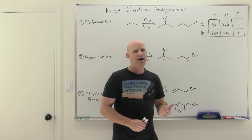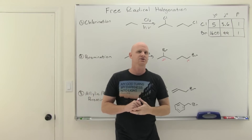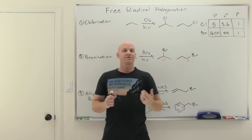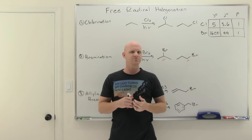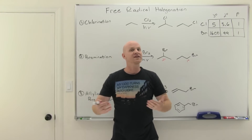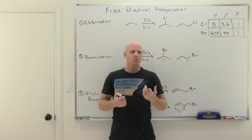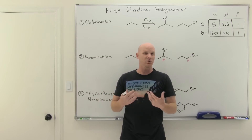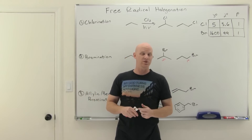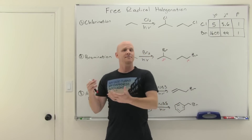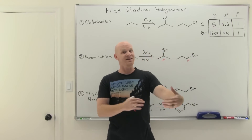Think of it like a lottery analogy. If I'm 10 times luckier per ticket than you, but you buy 1,000 tickets and I buy only one, then you factor both things in and you're actually 100 times more likely to win overall. The same idea applies here: when predicting relative amounts of chlorination or bromination products, you have to factor in both how much more likely you are to substitute at one position, and how many hydrogen atoms are available at that position.